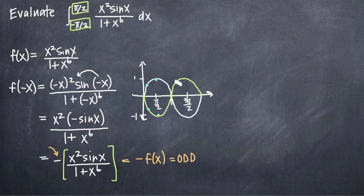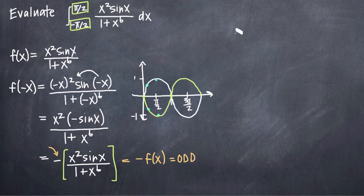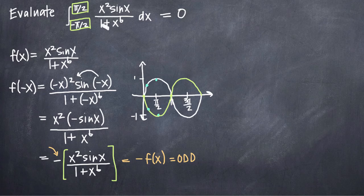Given that our function is odd, we can deduce that the whole integral is equal to 0. Just by identifying that the function inside is odd, we know immediately that the definite integral equals 0.